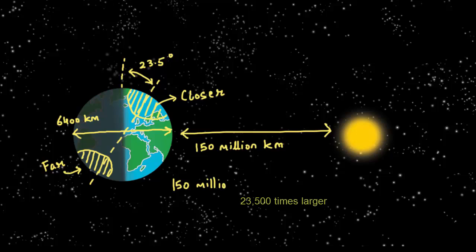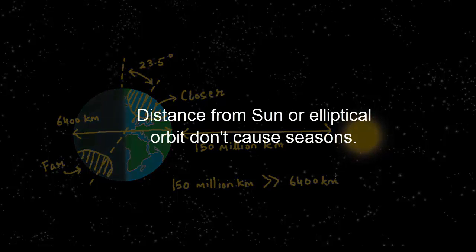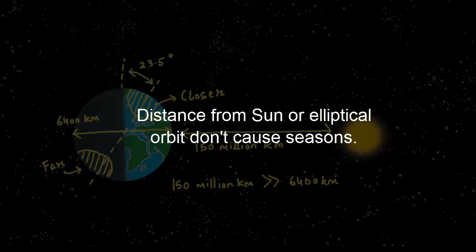This Earth-Sun distance is 23,500 times larger than the Earth's diameter. So this cannot cause Earth to come closer or go farther from the sun. In other words, distance from sun or elliptical orbit does not cause seasons.